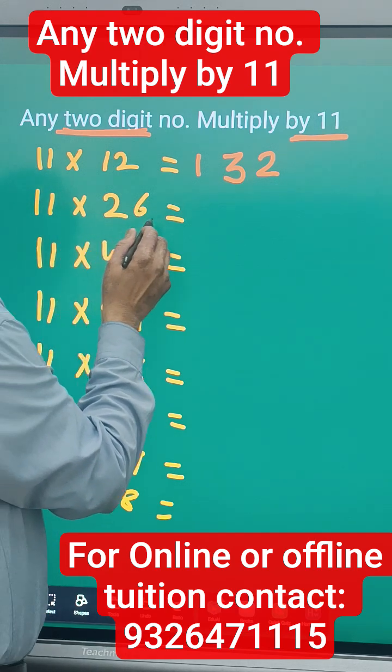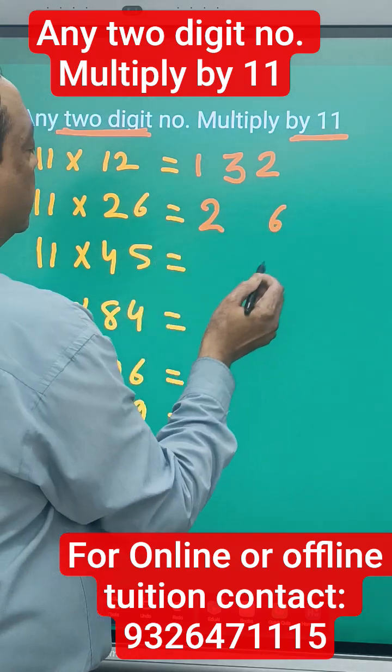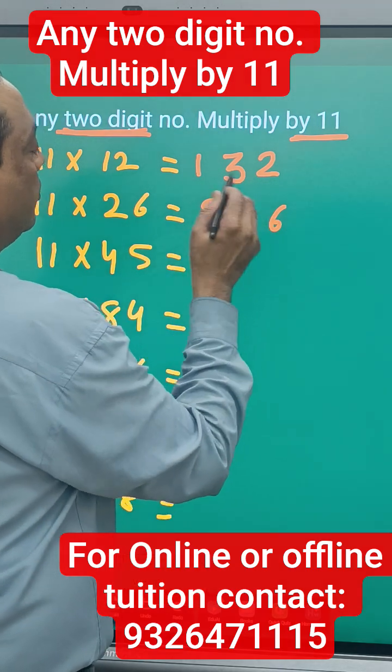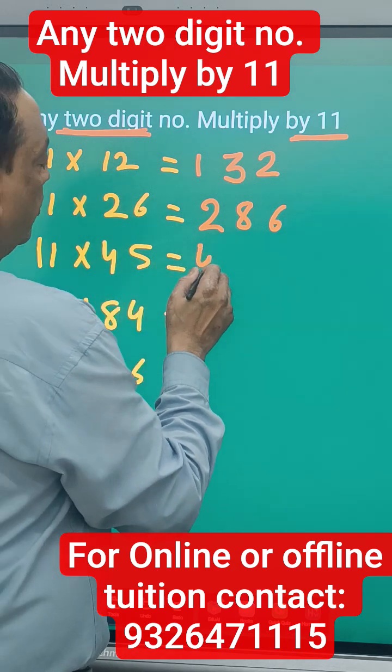Whatever the number given, like 26, keep as it is: 2 and 6. In between, the addition of these two. So 2 plus 6 gives you 8. Same way, 45: 4 here, 5 here, 4 plus 5 is 9.